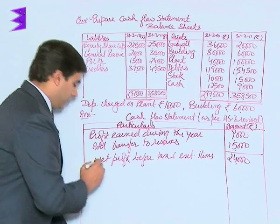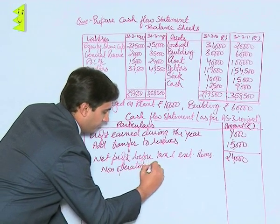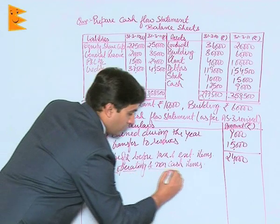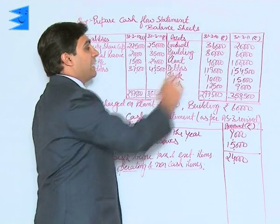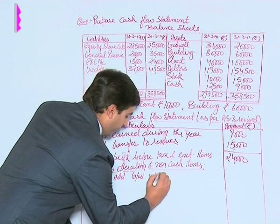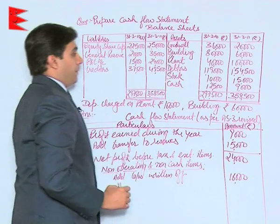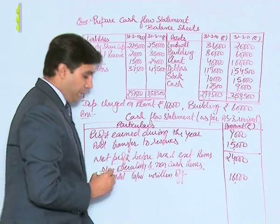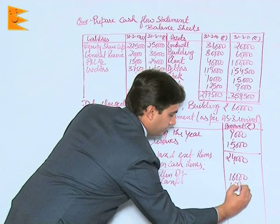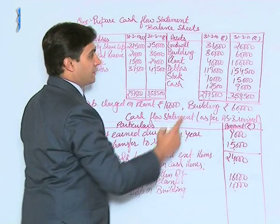To this value we will adjust non-operating and non-cash items. The non-cash items in this question are: goodwill that has been written off to the extent of 16,000 — so we add goodwill written off 16,000. Besides this, we have depreciation on plant which is 10,000, and depreciation on building which is 60,000. Both are added back.